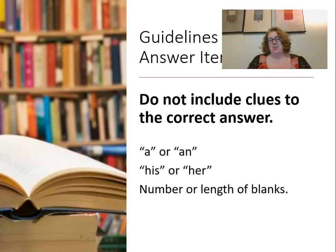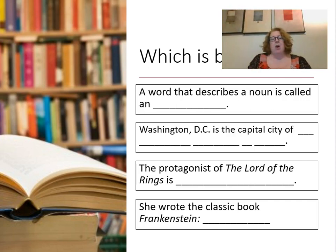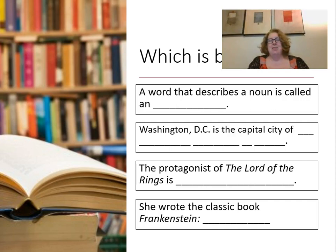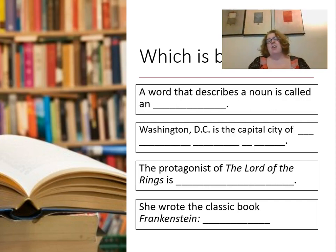Do not include clues to the correct answer — things like 'a' or 'an,' 'his' or 'her,' or the number and length of blanks. For example, saying 'a word that describes a noun is an blank' — that 'an' tells students the answer starts with a vowel, which narrows it to 'adjective.' Or using multiple blanks like 'Washington D.C. is the capital blank of blank blank blank' inadvertently signals 'United States of America.' Using 'she' as a pronoun clues students that the author is female. Try to avoid these inadvertent hints.